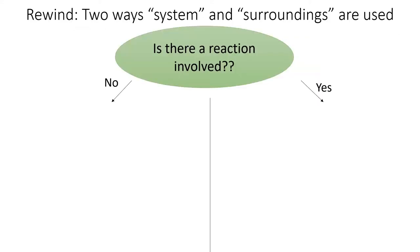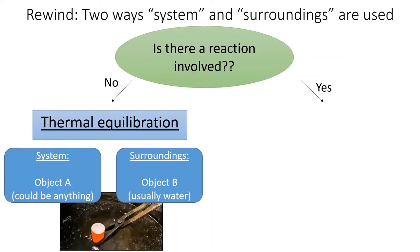Let's return to this flow chart from the last lesson. To determine which kind of calorimetry problem we're tackling, we ask the question: is a reaction involved? Last time, we saw that when no reaction is involved, we're dealing with a thermal equilibration problem.